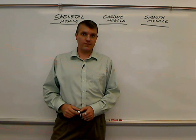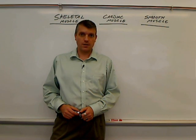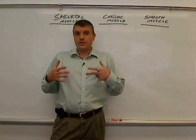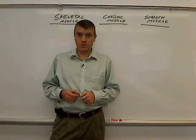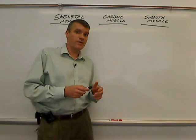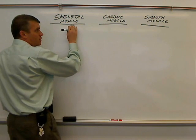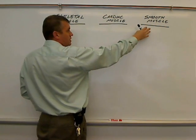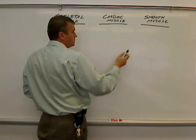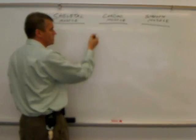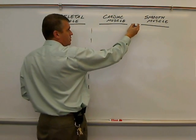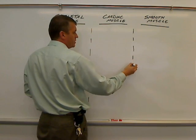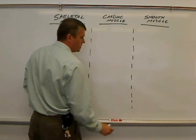Hello and welcome once again to Anatomy and Physiology at Glen Oaks Community College. I'm Dr. Ren Hartung. For this video, I would like to go through comparing and contrasting the three different types of muscle tissue. We've already talked about the three different types: skeletal muscle, cardiac muscle, and smooth muscle. Now I'm going to go through the similarities and differences between all of these.